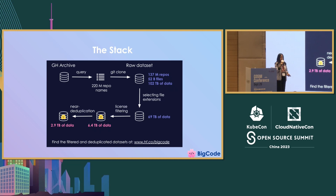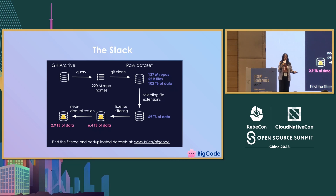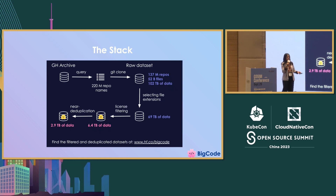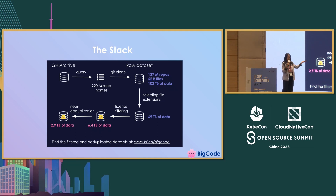The last step we did was remove duplicates. Since on GitHub there are a lot of forks, a lot of files look very similar. Studies have shown it's better to train your model without these duplicates, so we should only keep one copy of each file — this step is called deduplication. After deduplication, we lost almost half of the dataset size. We released this dataset called The Stack. It's public, anyone can use it, and it has almost 3 terabytes of code from GitHub.